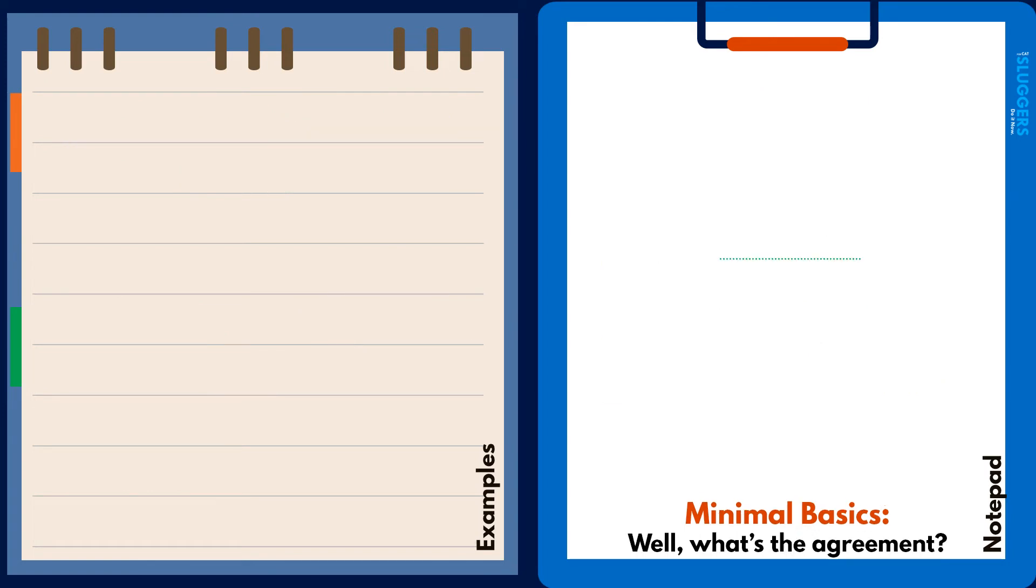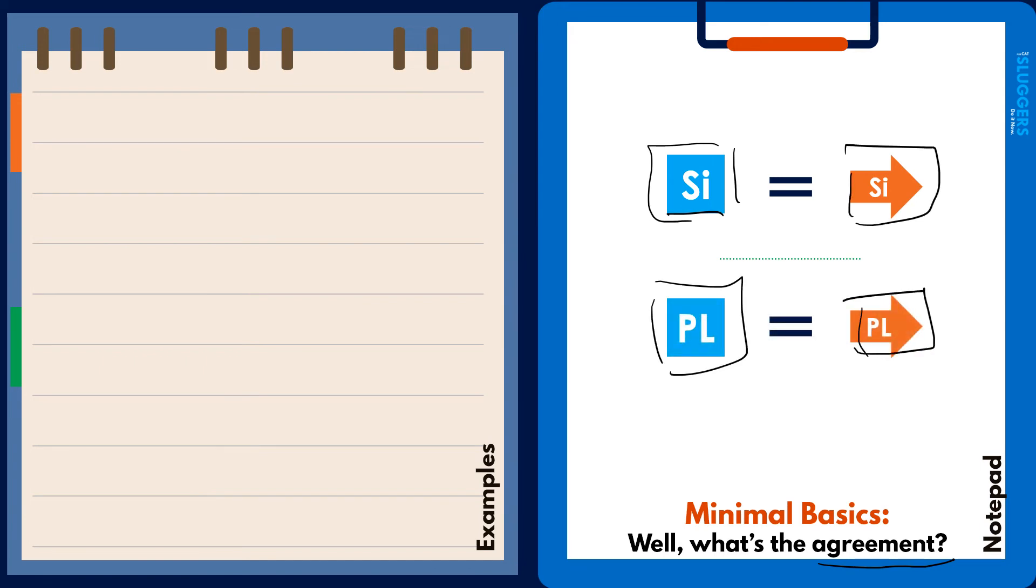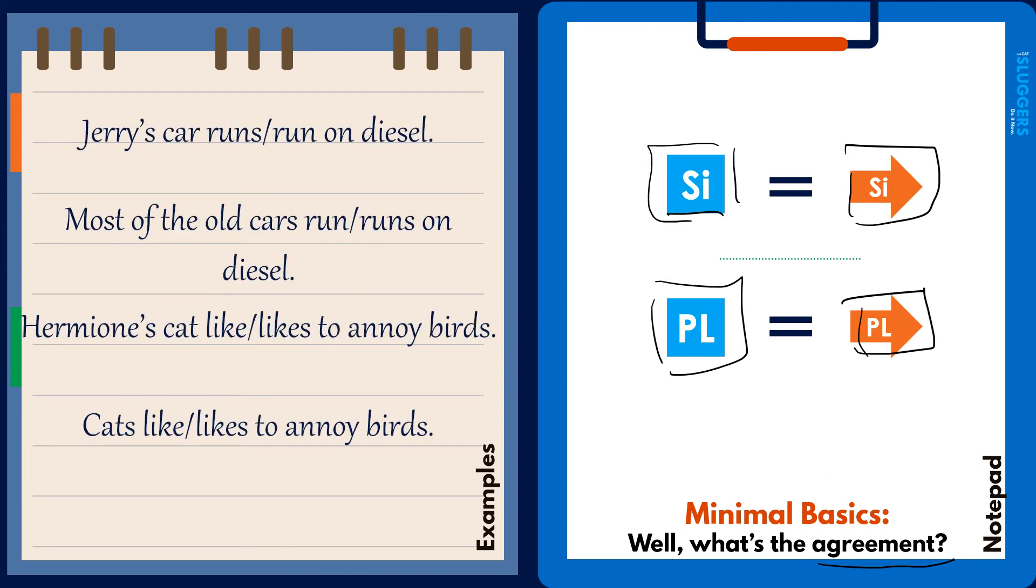Now finally, let's try to understand what's the agreement about in subject-verb agreement. Well, it's very simple. A singular subject should take a singular verb, and a plural subject is supposed to take a plural verb. Let's look at some examples. 'Jerry's car runs or run on diesel.' Jerry's car happens to be a singular subject, and hence we need to go for a singular verb here, which is 'runs.' So 'Jerry's car runs on diesel,' not 'run on diesel.' 'Most of the old cars run or runs on diesel.' In this case, the subject happens to be plural in nature, and hence the correct verb that should be used here is 'run,' which is the plural form, not 'runs.' So 'most of the old cars run on diesel.'